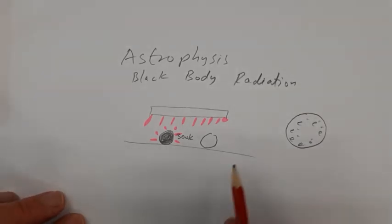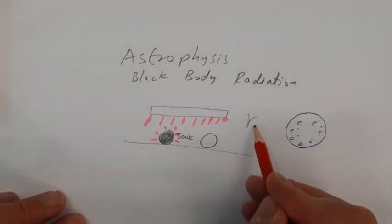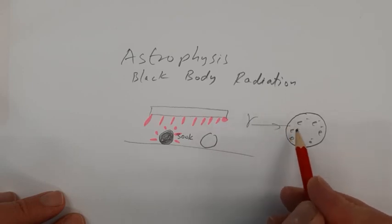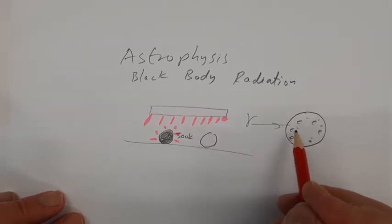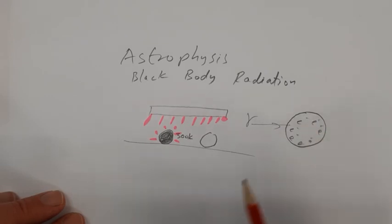A black body is something that absorbs all the radiation that falls on it. And any photon that goes into the sun will immediately meet an electron, transfer its energy to that electron and be absorbed. So at that moment, the energy's gone, it's a perfect black body.